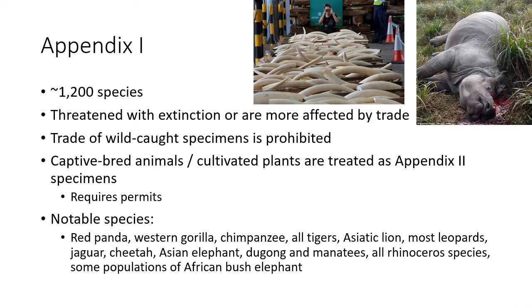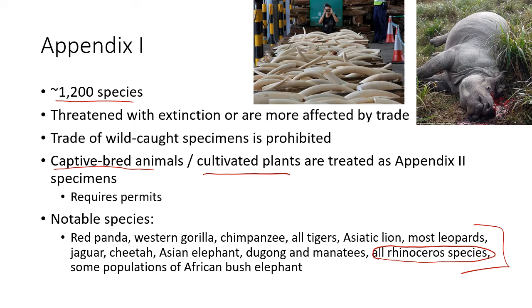Species on CITES are divided into three appendices. Appendix One includes the most threatened and most protected — about 1,200 species. These are threatened with extinction or heavily affected by trade, and trading or capture is strictly prohibited, except for captive-bred animals or cultivated plants. For example, if someone were captive-breeding rhinoceros, those individuals might move to Appendix Two. Essentially, it's illegal to trade these animals or plants or to harvest them from the wild.